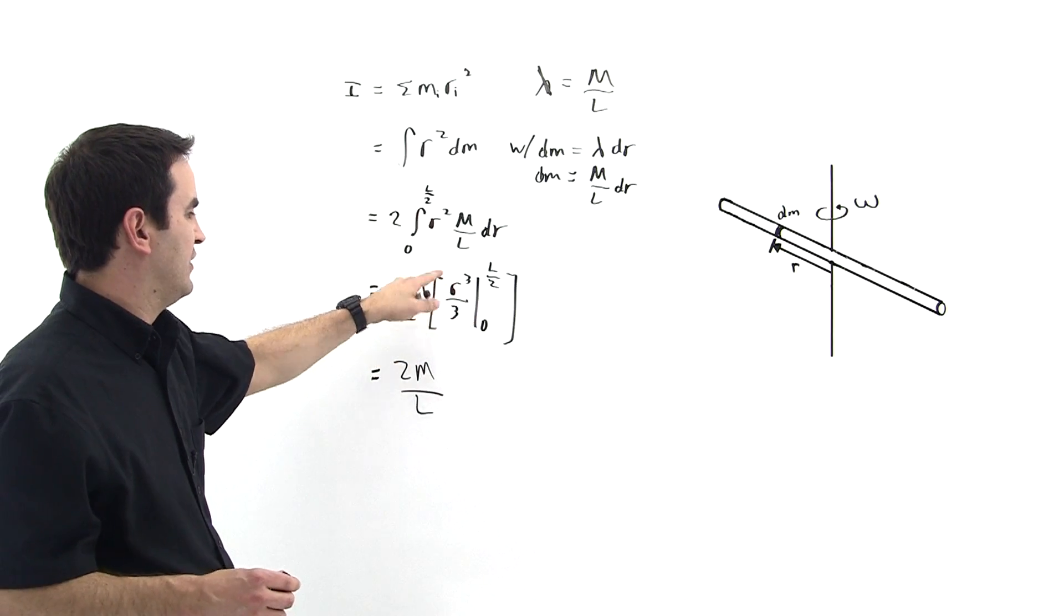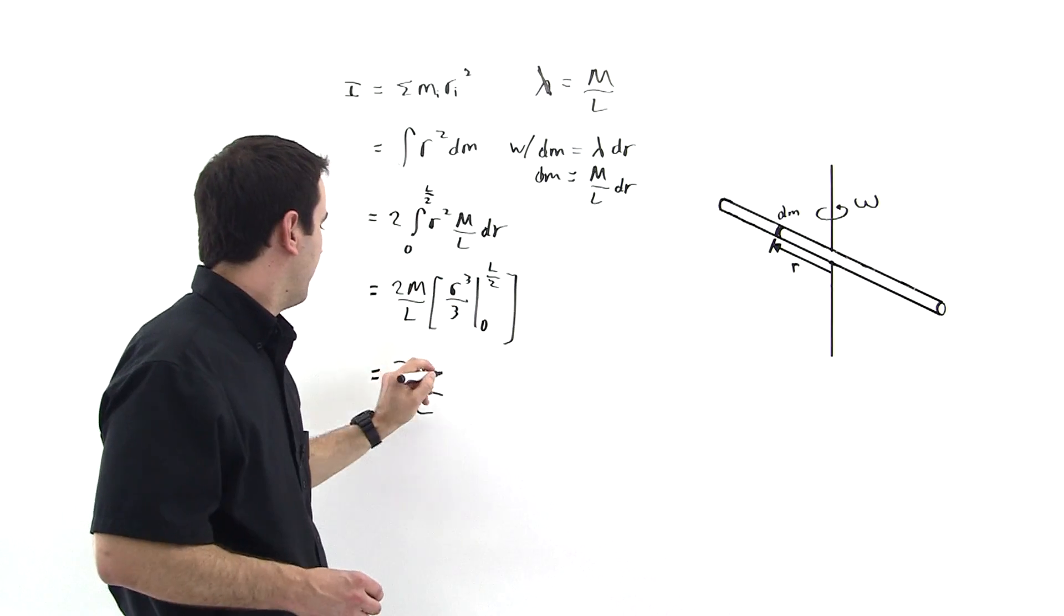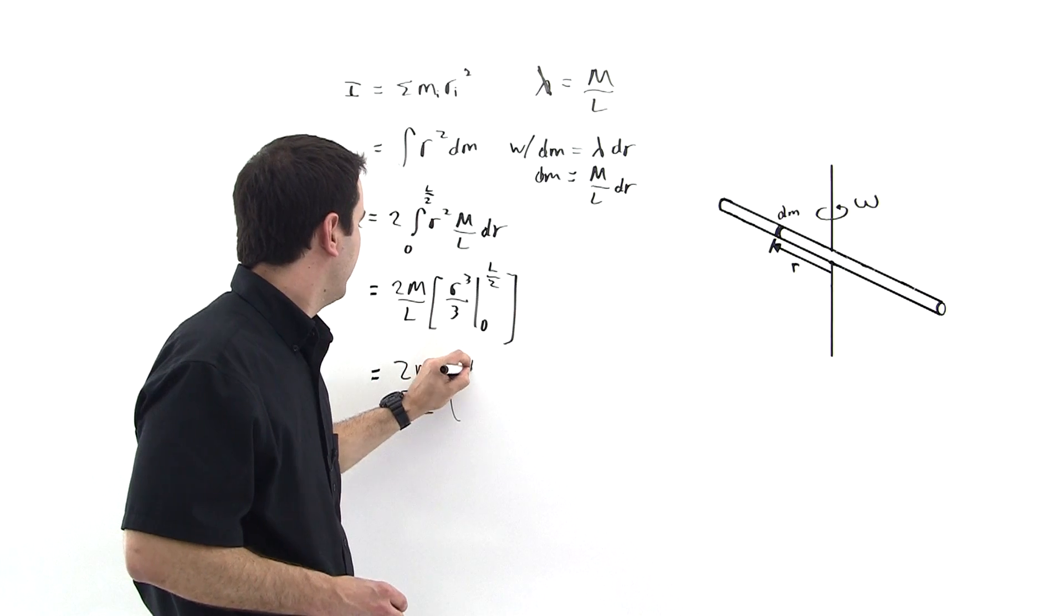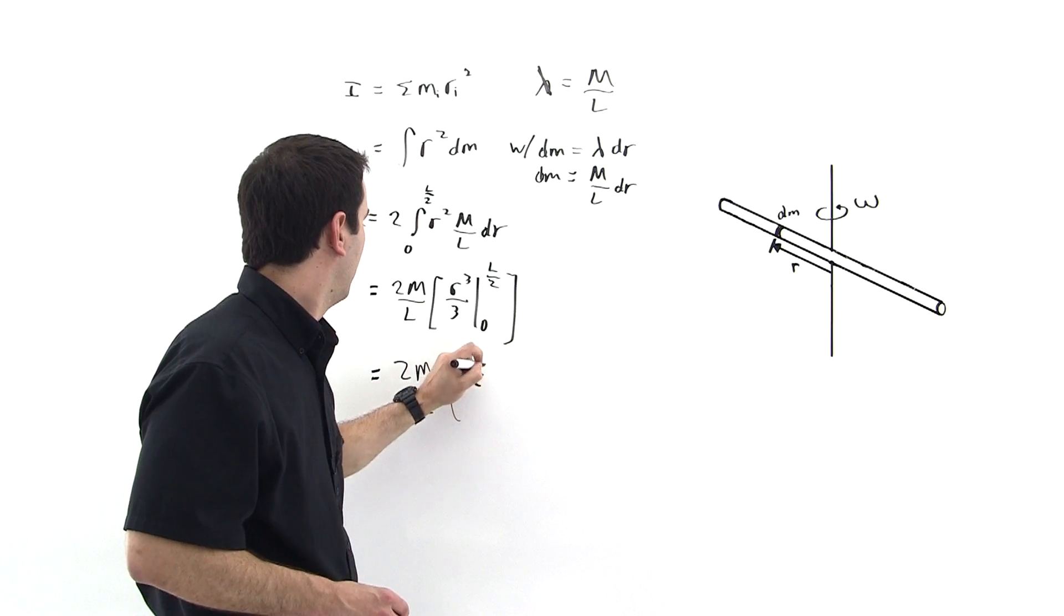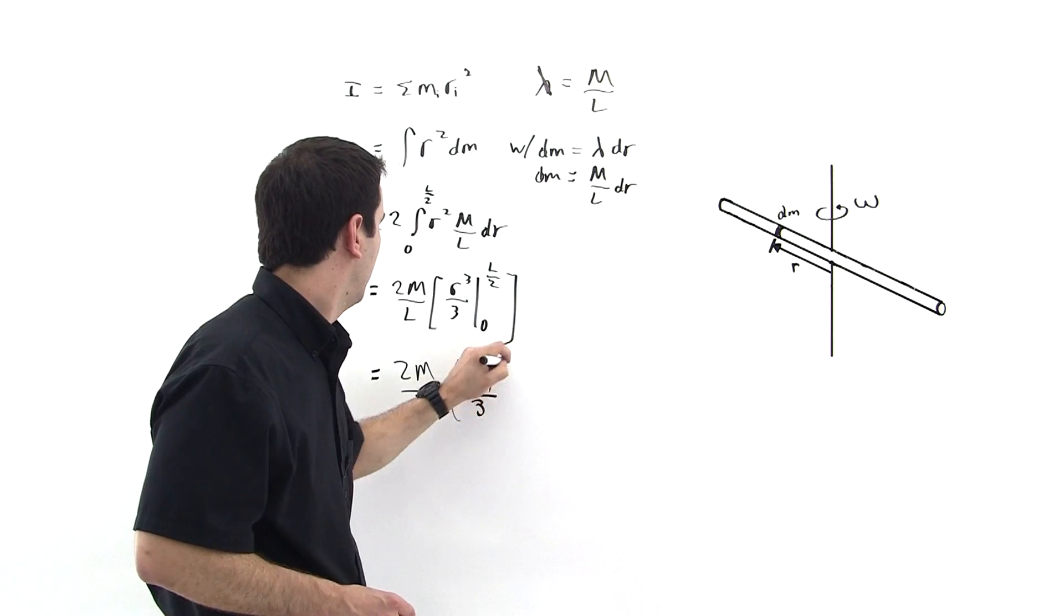But this evaluated at 0, this term is just 0. So we just need to evaluate this thing at l over 2 and put that guy right here. So this is l over 2 cubed over 3. Right?